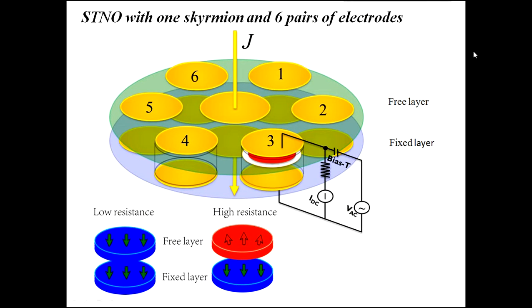This is a spin transfer nano-oscillator with one skyrmion and six electrodes. When the skyrmion moves into the area of the detection electrodes, the magnetization of the free layer and the fixed layer at the area of the detection electrodes are almost in an anti-parallel alignment. The resistance is relatively high, as in the case of three.